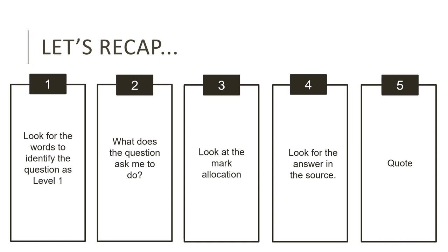Let's quickly recap what we've just learned. Step one: look for the words to identify the question as a Level 1 question — 'according to the source,' 'what,' 'where,' 'when,' 'name,' 'list.' Step two: read the question carefully to understand what it is asking you to focus on. Step three: look at the mark allocation so you know how many facts you need. Step four: read the source to find the facts. Step five: quote those facts from the source. If you follow these five steps, you will find that answering a Level 1 question is actually very easy.